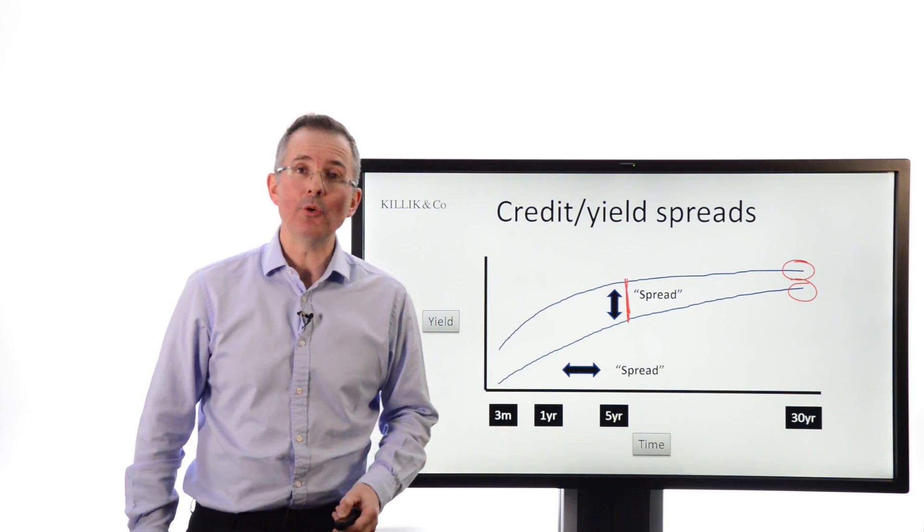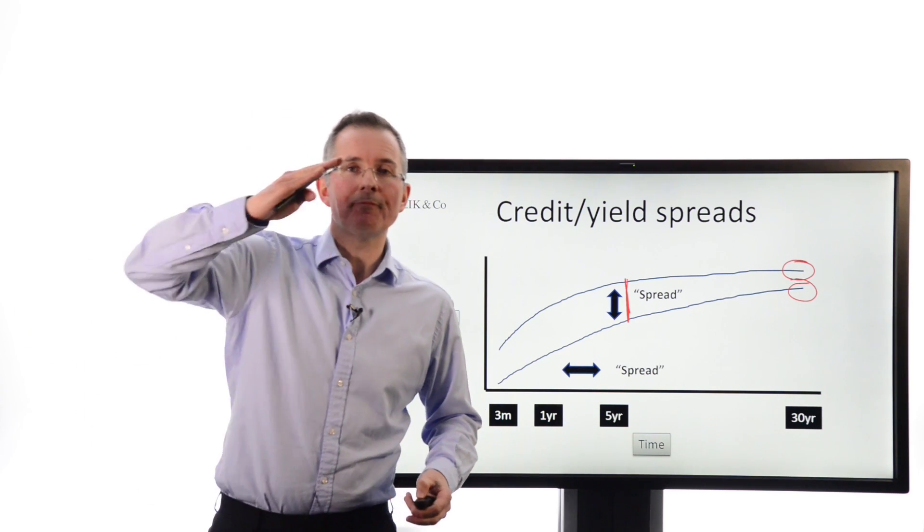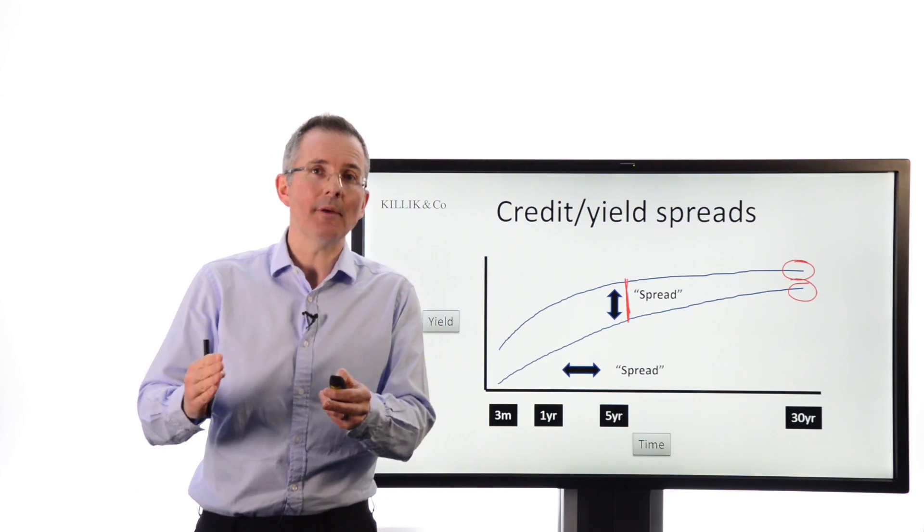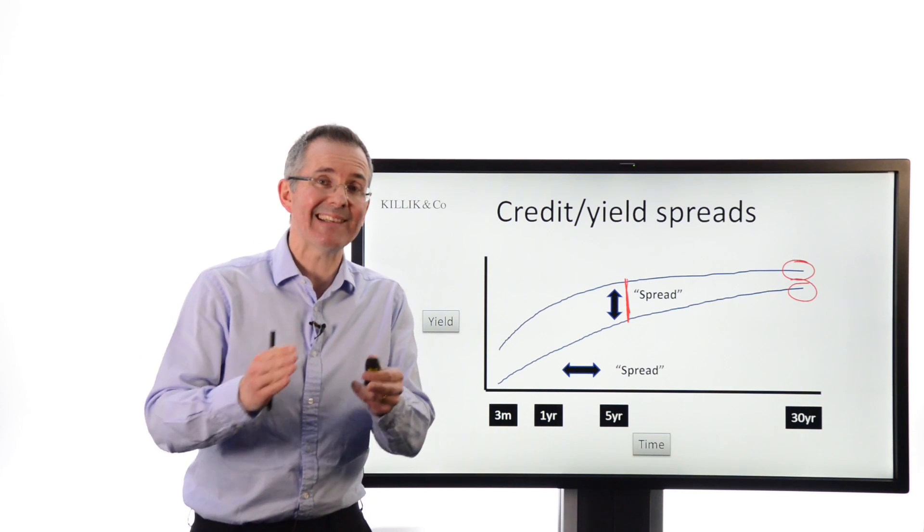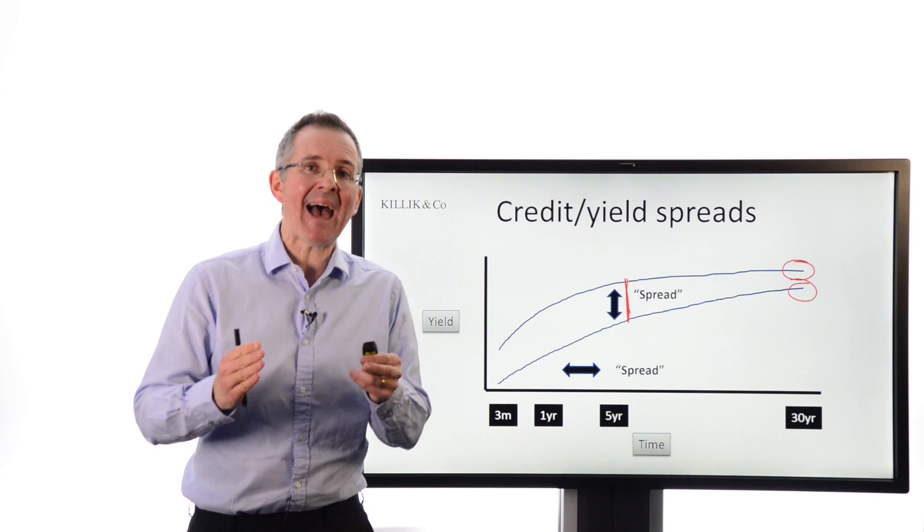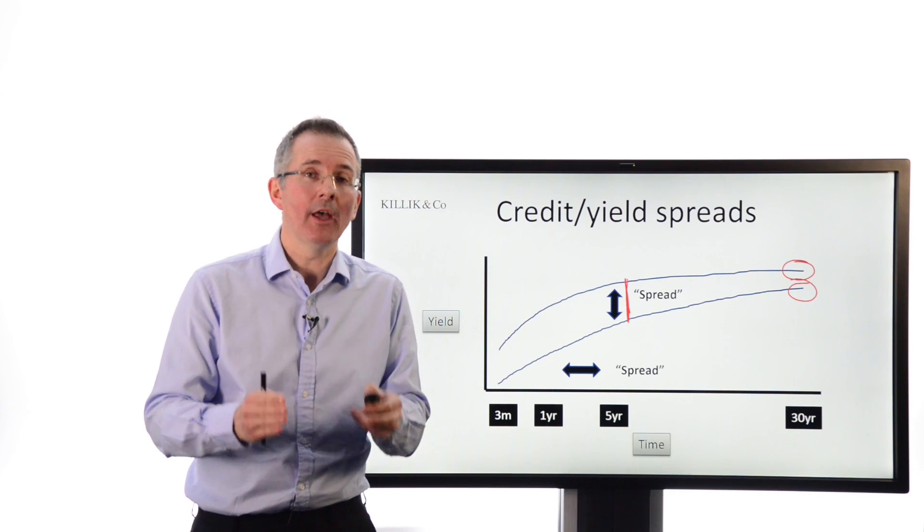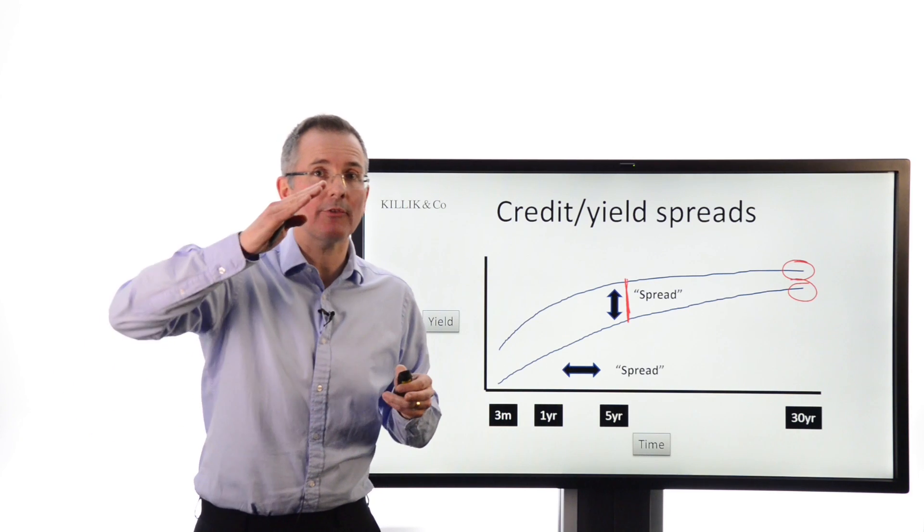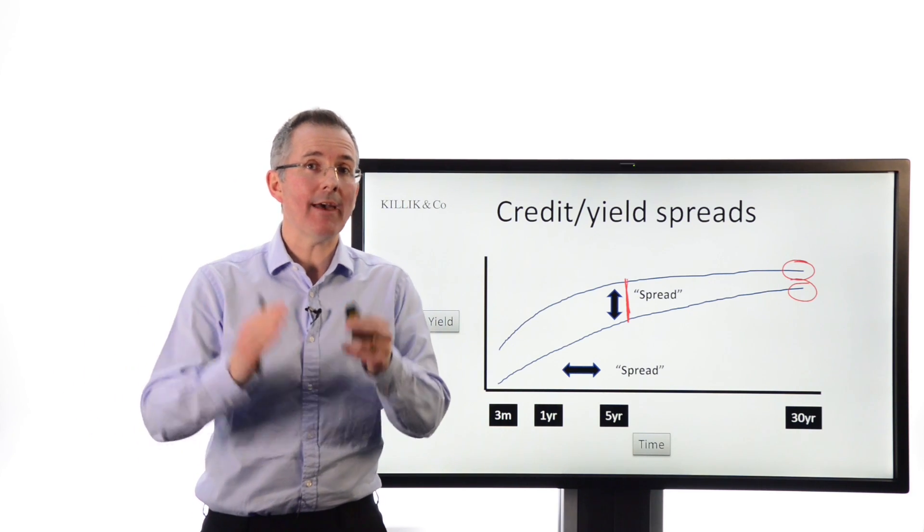And there's another type of spread that matters too. How steep a yield curve, if it's upward sloping is, is driven to an extent by how much extra reward investors demand for taking the risk of locking into longer-dated securities. So essentially, the pace of future interest rate rises, the expected pace, will to some extent influence the steepness of the curve and therefore the shape of it.